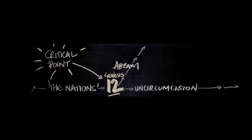If you look at the diagram here, you'll see the nations, then the critical point at chapter 12, and then the nations carry on on their own. That's what Ephesians chapter 2 verses 11 and 12 speaks about — the uncircumcision. The nations become the uncircumcision, and we see in chapter 12 that Abraham is called out.